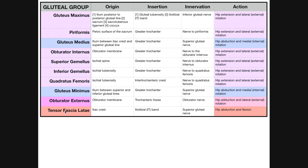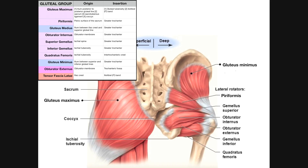The tensor fasciae latae will not be discussed in this video because it has very different functions. Some sources group it with these muscles based on proximity rather than action, but it will be covered in later videos. Hopefully you now have a better understanding of the deep gluteal muscles, their functions, and how to differentiate the obturator internus from the externus — which is based on which aspect of the obturator membrane the muscle originates on. Please like this video and subscribe for future videos and notifications.